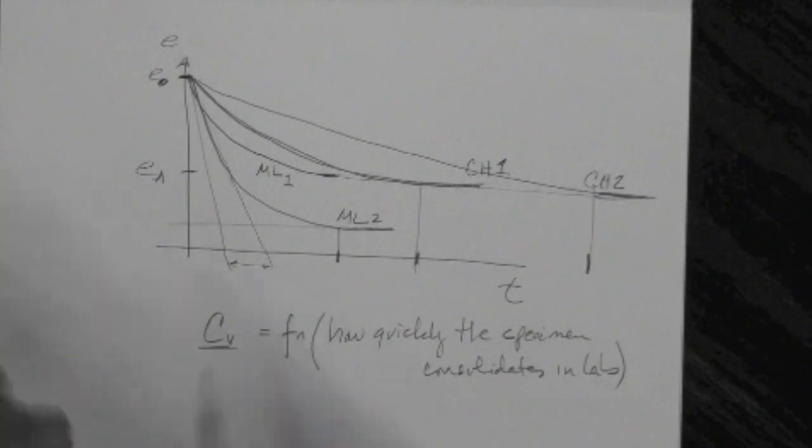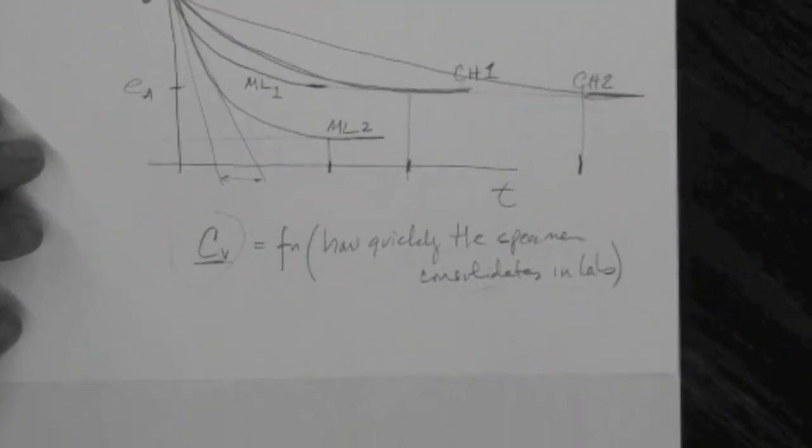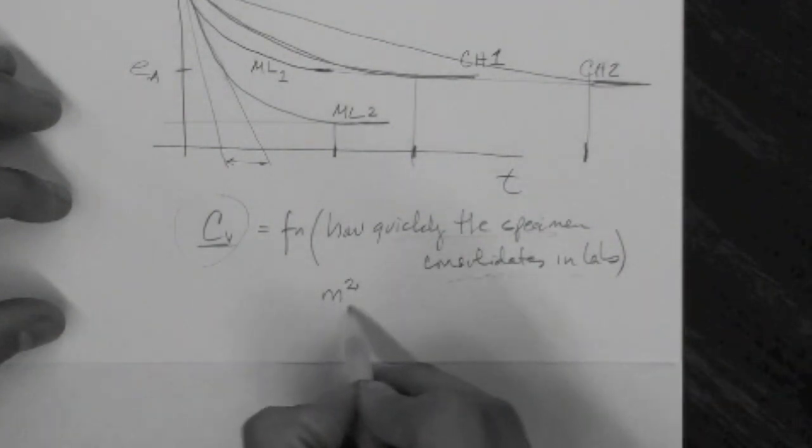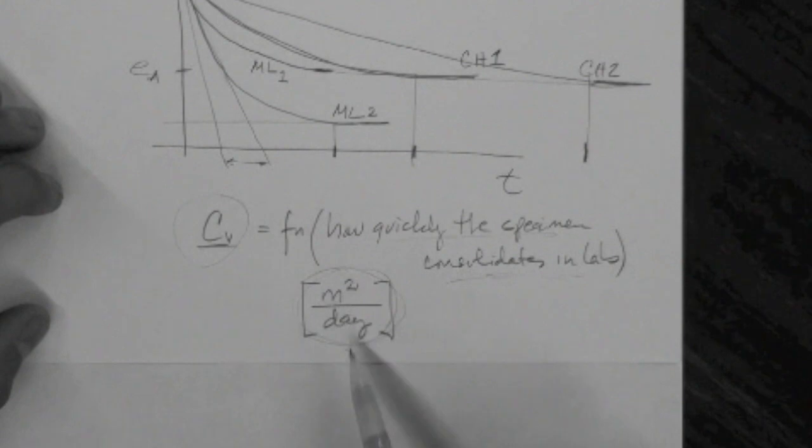And essentially it's obtained from a lab test, the consolidation lab test. And its value is a function of how quickly the specimen consolidates in the lab. The C sub V is called the coefficient of consolidation, and the units are typically meters squared per day. So length squared over time. Those are the units of C sub V, and this is generally the way that the units are presented, in meters squared over time.